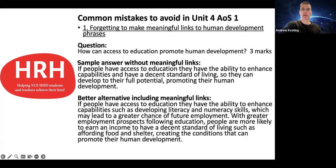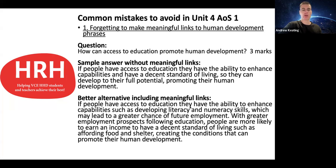Here's a sample answer without meaningful links: 'People having access to education means they have the ability to enhance their capabilities and have a decent standard of living so they can develop to their full potential, and therefore that promotes human development.' You can see the phrases are just strung together without showing meaningful understanding. A better alternative: 'If people have access to education, they can enhance their capabilities such as developing literacy and numeracy skills, which may lead to greater employment prospects. With greater employment, people are more likely to earn an income to afford a decent standard of living such as food and shelter.' That's a meaningful link — not just stringing phrases together — and you might finish by linking back to people's ability to develop to their full potential and promote human development.